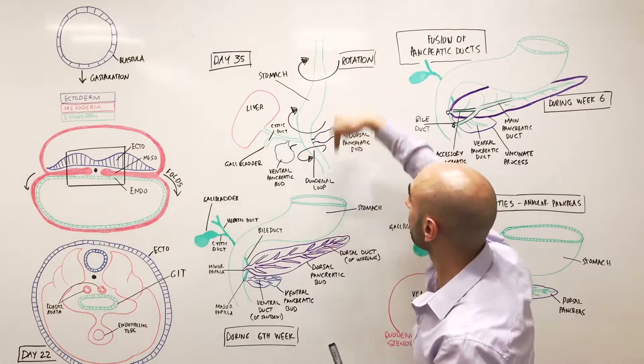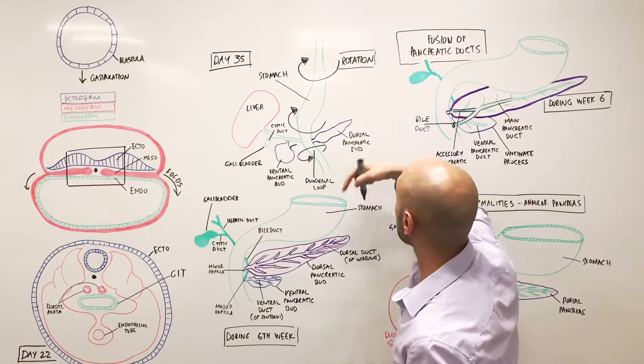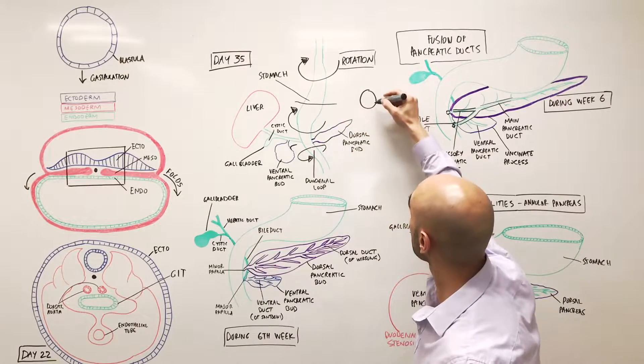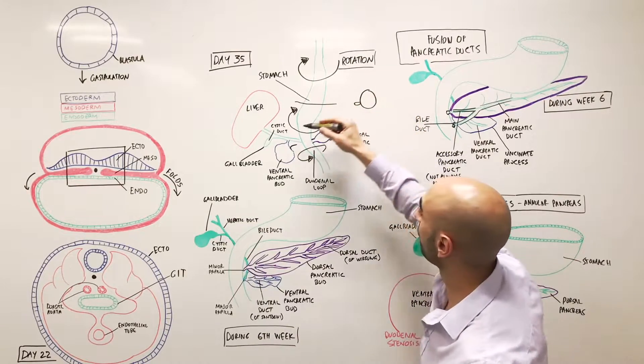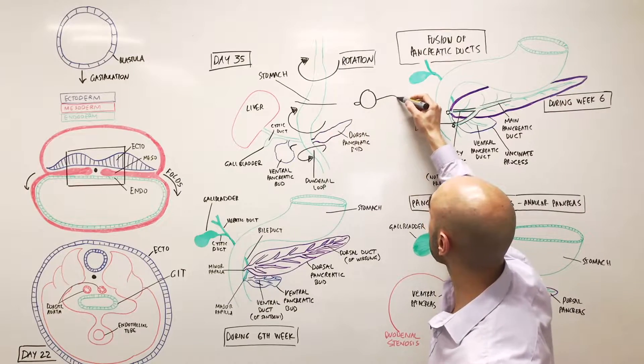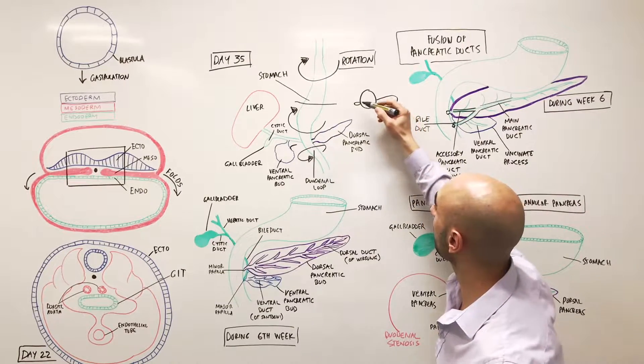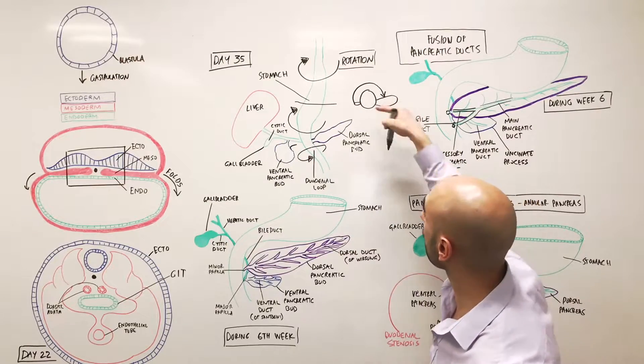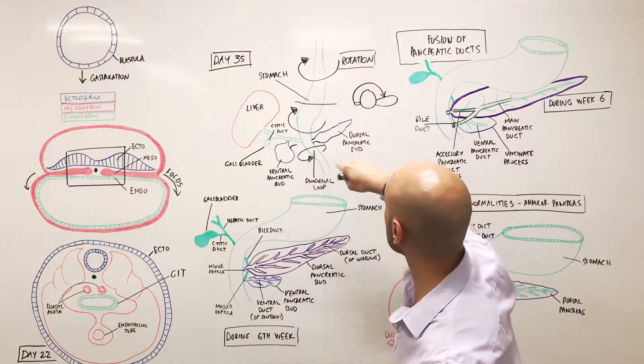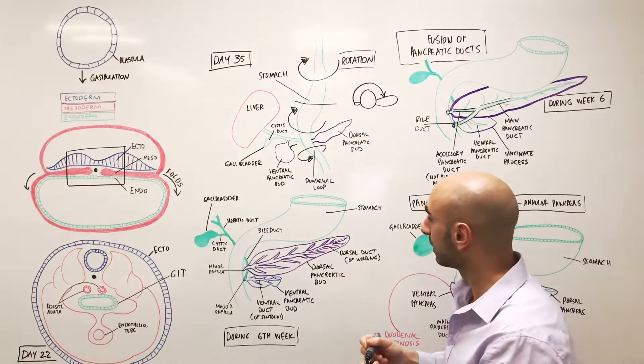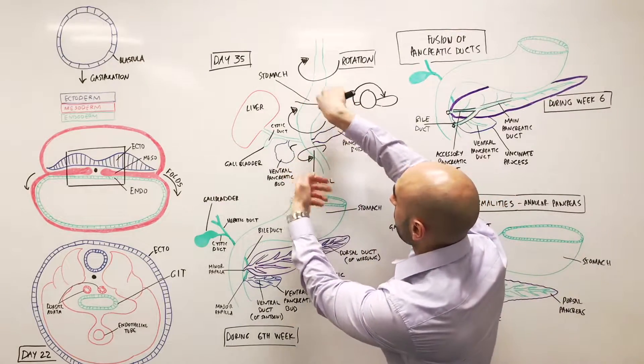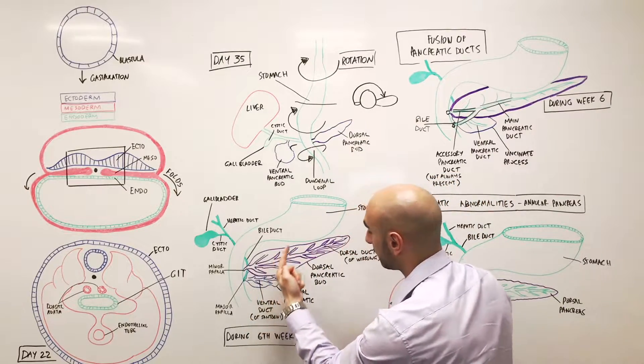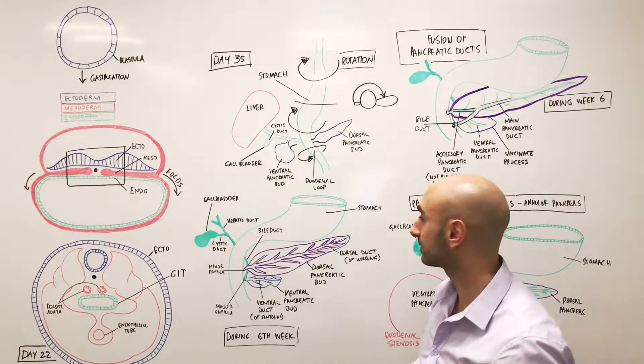So if we were going to look from up here, like this, if this is your stomach, cross section here, and that's the ventral pancreatic bud, and that's your dorsal pancreatic bud, it rotates this way. So clockwise, if you're looking at it from the top. So they're rotating, and the ventral comes down, and it sits inferior and posterior to the dorsal pancreas.